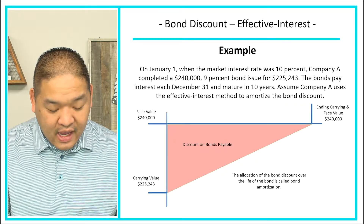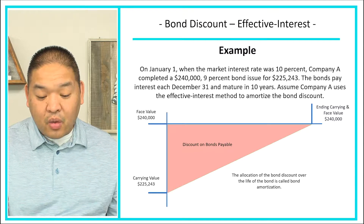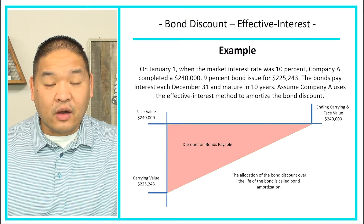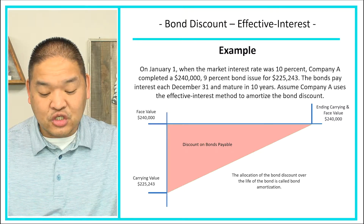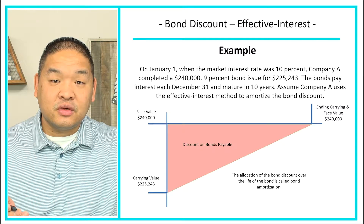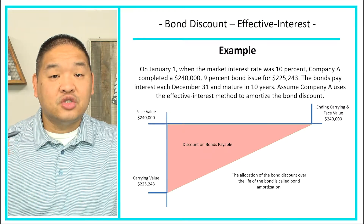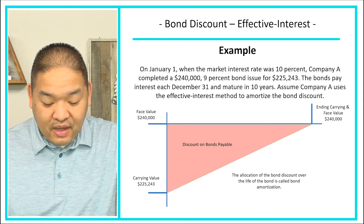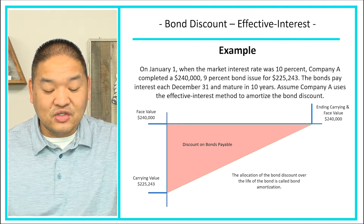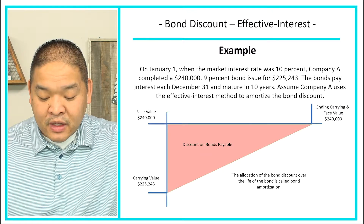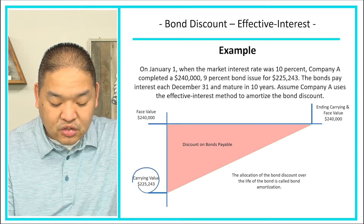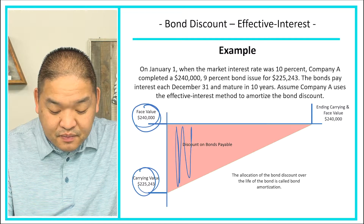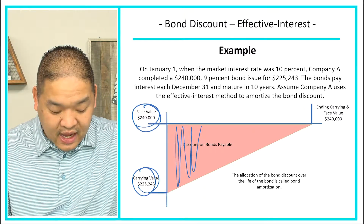Looking at our example: on January 1st, when the market interest rate was 10%, Company A completed a $240,000, 9% bond issued for $225,243. So they collected $225,243 but the bonds were worth $240,000. The bonds pay interest each December 31st and mature in 10 years. Company A uses the effective interest method to amortize the bond discount.